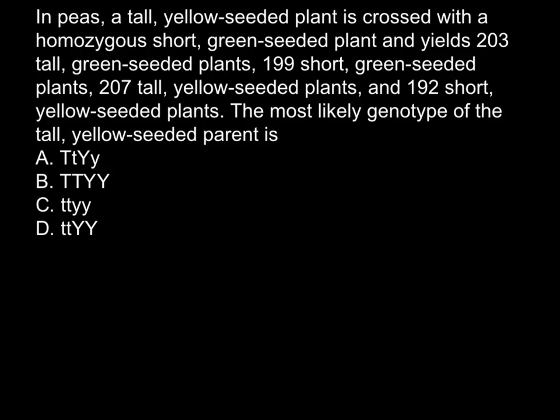Here is the problem. In P.S., a tall yellow seeded plant is crossed with a homozygous short green seeded plant, and yields 203 tall green seeded plants, 199 short green seeded plants, 207 tall yellow seeded plants, and 192 short yellow seeded plants. The most likely genotype of the tall yellow seeded plant is one of the four given answers.